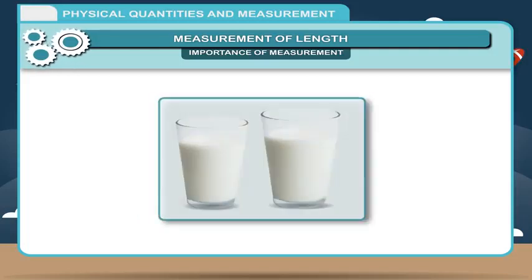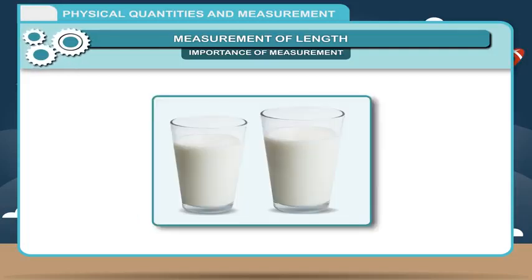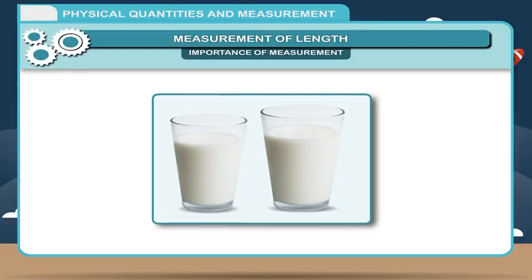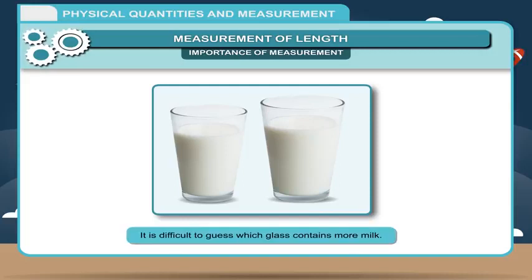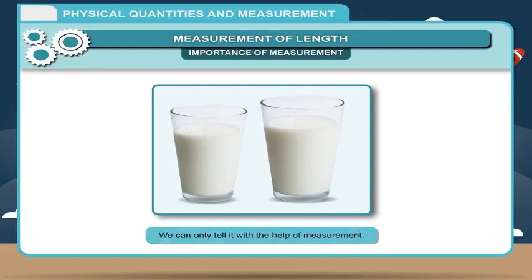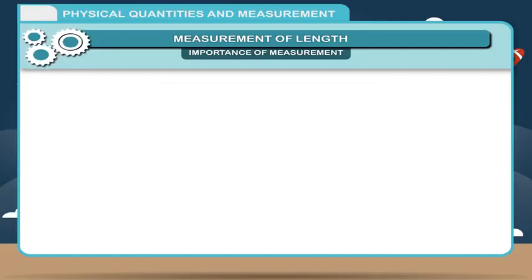Example 2: Two glasses containing milk are given. In the figure, two glasses contain milk and it is difficult to guess which glass contains more milk. We can only tell with the help of measurement.